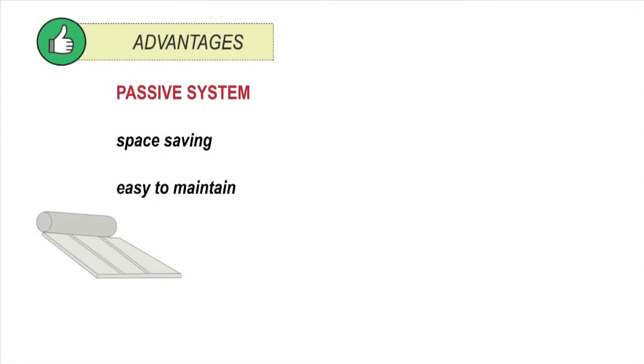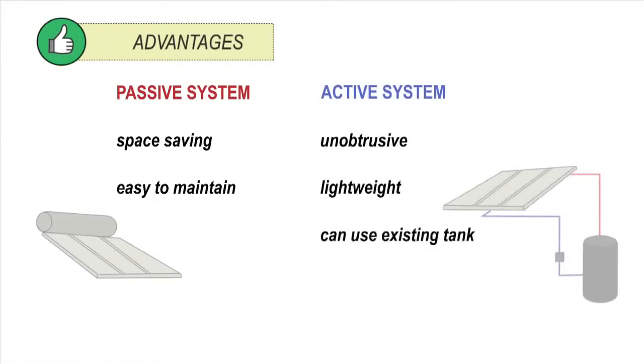Each type of system has advantages. A passive system is space-saving and is easy to maintain with no moving parts. An active system is unobtrusive, lightweight, can use an existing tank, and the tank can be located closer to where hot water is used, reducing heating loss in pipes. But the pump uses some energy.